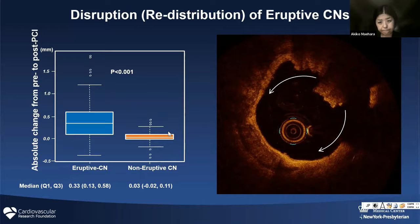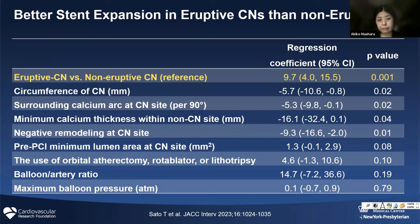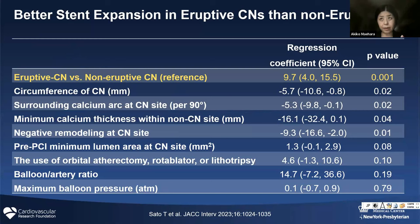We asked: what is the predictor of good stent expansion? Eruptive is better compared to non-eruptive. The circumference of the calcified nodule — meaning how big it is — also matters; a bigger nodule means poor stent expansion. Additionally, when looking at the calcified nodule, don't only look at the nodule — you must look at the other side, because those are the important areas for stretching the artery. If you have big calcium in the non-calcified nodule side, which we call surrounding calcium, that indicates poor stent expansion.